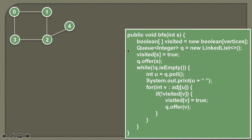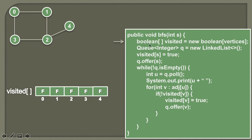Let's see the working of this algorithm step by step, starting with source node zero. In the first step, we create a Boolean array whose size equals the number of vertices in the graph. This graph has five nodes, so we create a Boolean array named 'visited' of size five. Since it is a Boolean array, all values are initially marked as false, because we haven't visited any node yet.